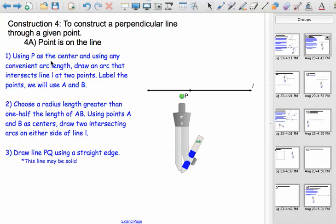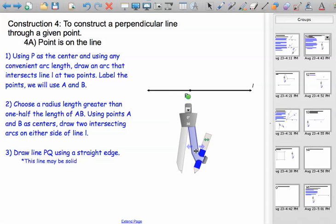So using P as the center and using any convenient arc length, so you have the freedom to choose how big you want the arc to be, you're going to draw an arc that intersects line L at two points and you're going to label the points and you're going to use A and B in this case. When you actually do constructions you can use any letters you want.